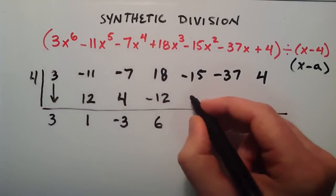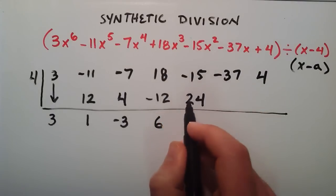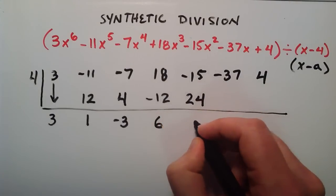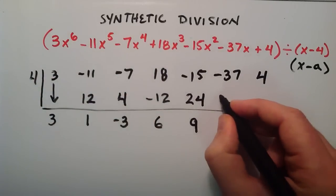6 times 4 is 24. A negative 15 plus a negative 24 is going to give us 9. 9 times the 4 is going to give us 36.